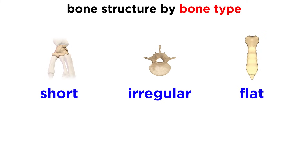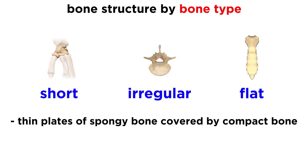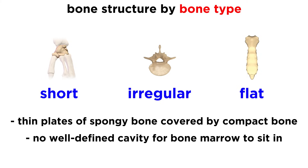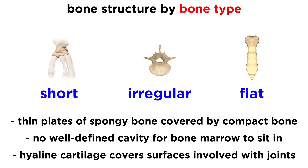The precise arrangement of compact and spongy bone depends on the bone type. Short, irregular, and flat bones all consist of thin plates of spongy bone covered by compact bone. There is no well-defined cavity for the marrow to sit in, and hyaline cartilage covers portions of the surface that are involved with joints.